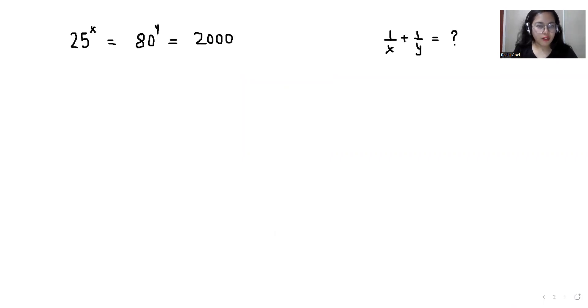In this video we have given that 25 power x, 80 power y equals 2000, and we have to find the value of 1 over x plus 1 over y. So let's start the solution.